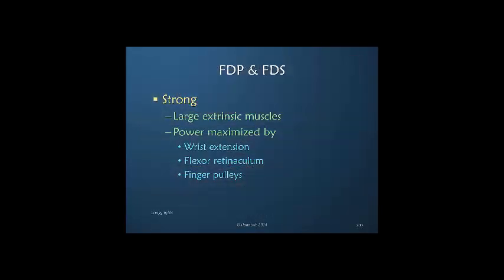Both the FDS and FDP are very strong extrinsic muscles. The power for both of these muscles is maximized by wrist extension, by the presence of the flexor retinaculum that does not allow these tendons to bowstring, as well as the pulleys within the flexor sheath that keep the flexor tendons very close to the bone of the finger to maximize potential power.